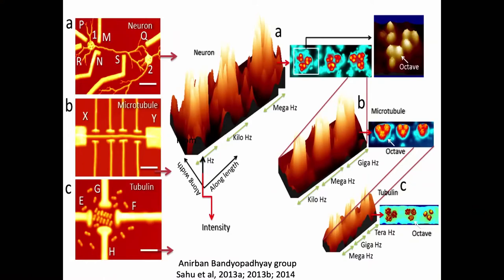Bandyopadhyay looked at microtubules with nanotechnology, looking for quantum resonances with nanoprobes at the level of individual microtubules and tubulin. He would sweep the frequency, stimulate with AC alternating current, and measure conductance. He found that at certain specific frequencies the microtubule became highly conductive, while in between those frequencies it was a good insulator. He plotted those resonant frequencies and found self-similar patterns — he calls them triplets of triplets or octaves — at the terahertz range from tubulin, then gigahertz and megahertz from microtubules, then megahertz, kilohertz, and Hertz from whole neurons.